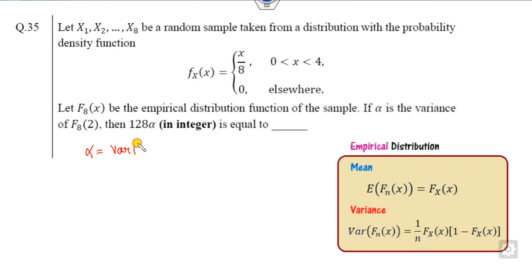What is given to you? Alpha is variance of F_8(2). So if you compare them, what is n? n is 8, x is 2.